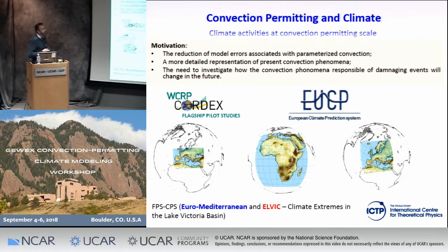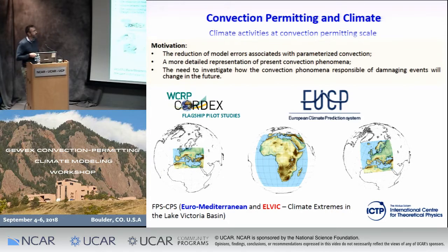But recently, thanks to improvements in computer capacity and model development, it was possible to work in climate activities in convection permitting, and different projects were born. Here I have reported some examples: two important projects from CORDEX flagship pilot studies — one focused on the Euro-Mediterranean area, another focused on the eastern part of Africa, specifically over Lake Victoria — and another important project is a European project called UCP, the European Climate Prediction System.